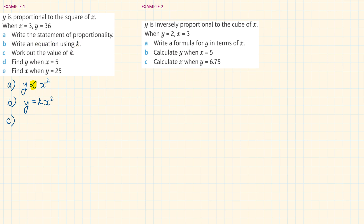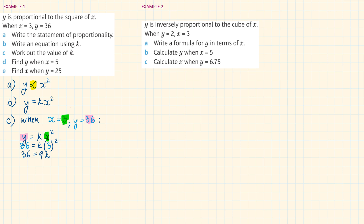Part C: work out the value of K. When X is equal to 3, Y is equal to 36. In the equation Y equals K X squared, we have 36 equals K times 3 squared. Then 36 is equal to 9K because 3 squared is 9. Because we are interested in K, we divide both sides by 9, so K is equal to 4. Now that we have K, we also have a formula: Y equals 4X squared.